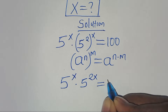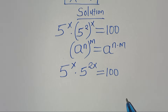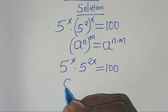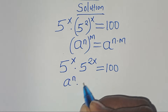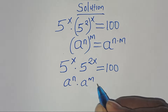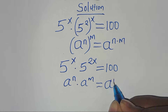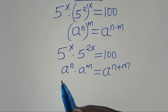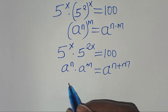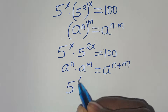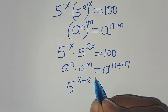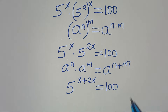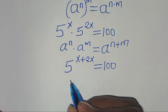This is equal to 100. This is in the form of a to the power of n times a to the power of m, which we can express as a to the power of n plus m. Applying this exponential property, we have 5 to the power of x plus 2x, which equals 100.